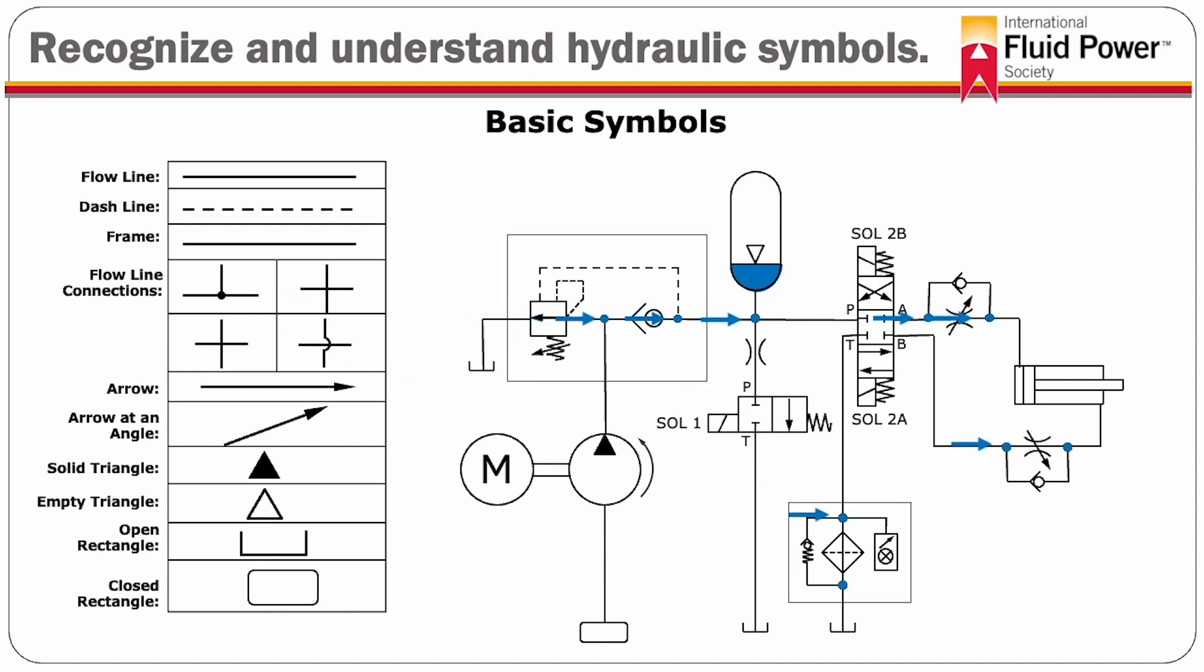Flowline connections. It is important to be able to recognize the relationship of flow lines in a circuit. Flow lines are connected as indicated by the dot at the intersection point. They may also cross without being connected. This would be indicated without a dot. Crossing lines can sometimes be confused with connected lines, so be sure to determine the difference.